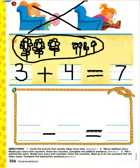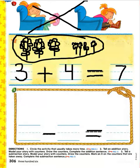Five quarters fell onto the floor. Then one girl picked up two quarters. How many quarters are still on the floor? Five quarters fell on the floor, then a girl picked up two of those quarters. How many quarters are still on the floor? Go ahead and pause the video, draw what you think, and then unpause to see the answer.